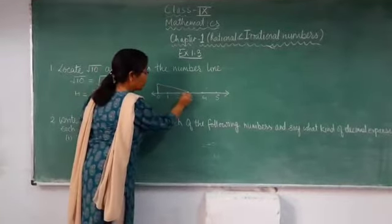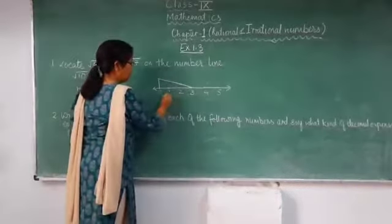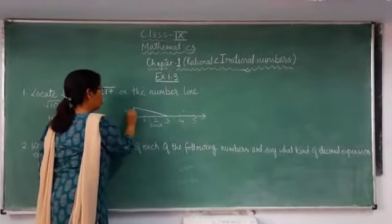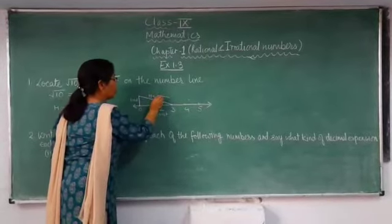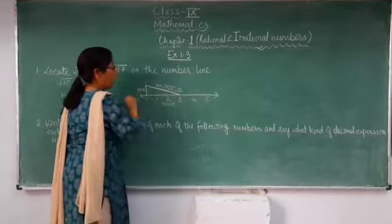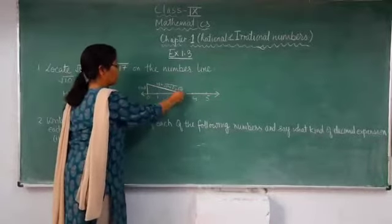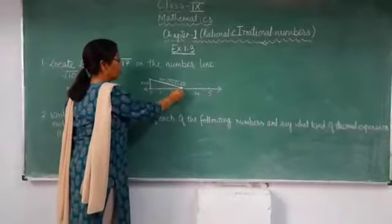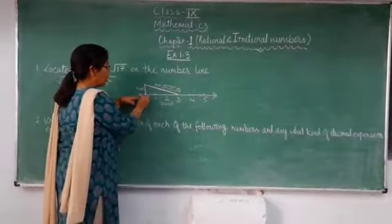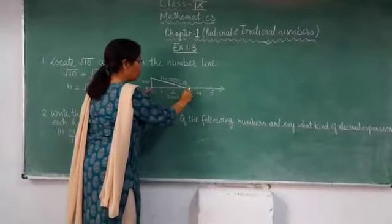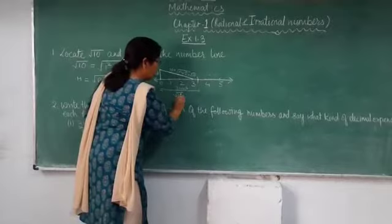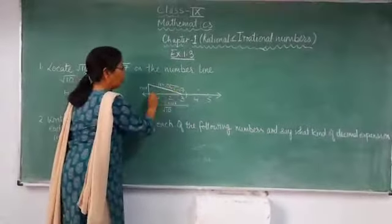We join these points. The base is 3 units and the perpendicular is 1 unit, so the hypotenuse h = √(1² + 3²) = √10. This line whose length is √10 — we take this length with the compass, keeping the origin as center, and draw an arc on the number line. Whatever point the arc intersects on the number line, that length will be √10. That is how you locate √10 on the number line.